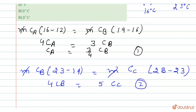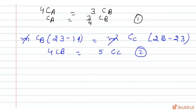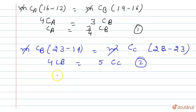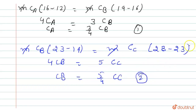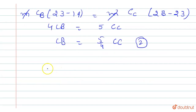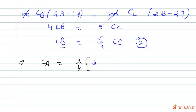The m cancels, and we get 4·Cb = 5·Cc. This is the second equation, giving us Cb = (5/4)·Cc. From the first and second equations, we conclude: Ca = (3/4)·Cb = (3/4)·(5/4)·Cc = (15/16)·Cc.